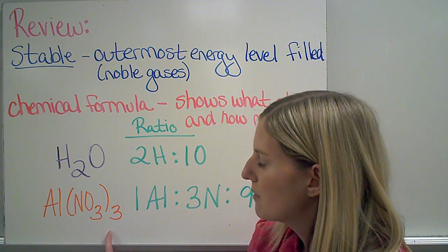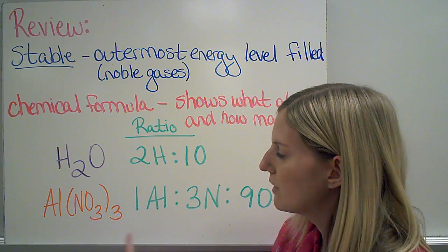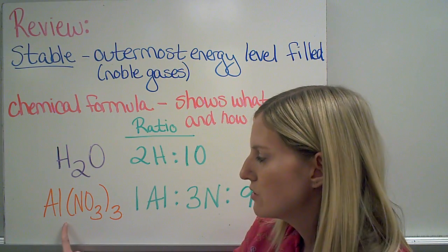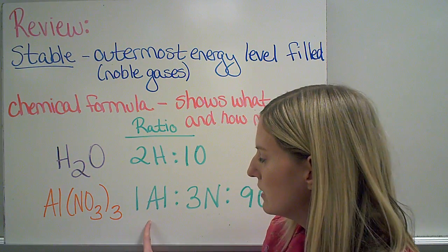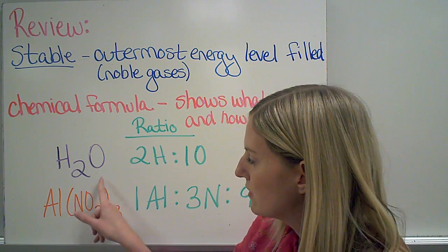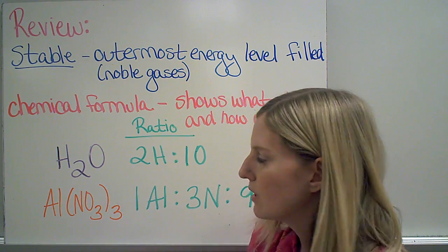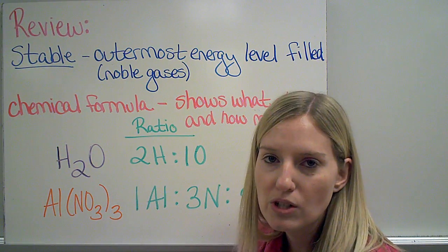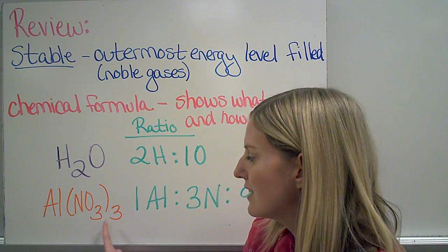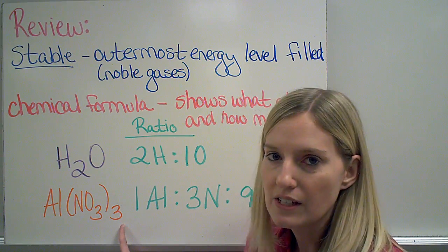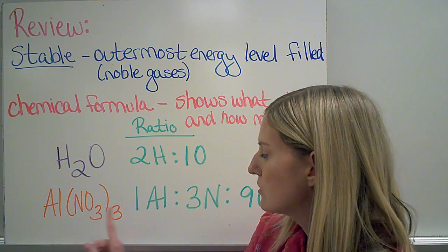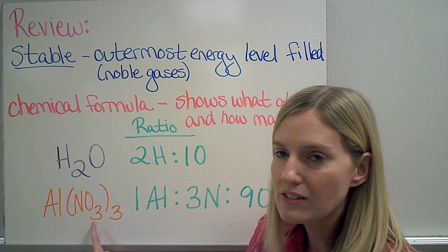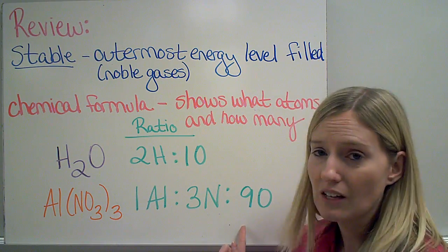Here's another compound. For its ratio, I see that after Al for aluminum, there's no subscript, so that means there's one. And then I have these parentheses. If there's a subscript after the parentheses, that subscript goes for anything that's in the parentheses. So there would be three nitrogens, and there would be three times three oxygens to give us nine.